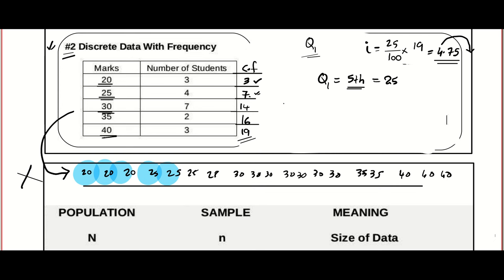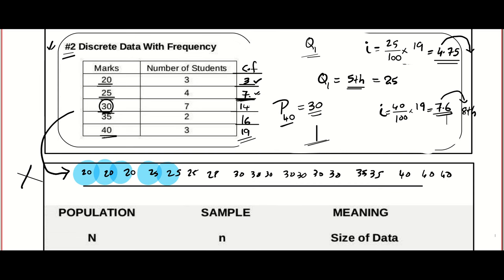Suppose I want to find percentile 40 — P40. I calculate the index: 40 by 100 into 19, which gives 7.6. So I go for the eighth item. The first seven items are covered by 20s and 25s, and the eighth to fourteenth items are 30. So my answer is 30, meaning 40% of the data falls below 30.